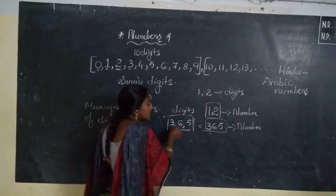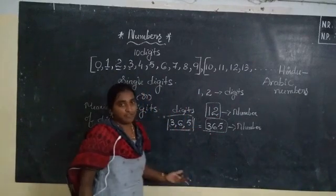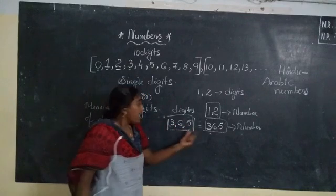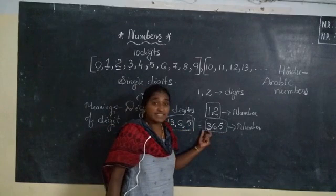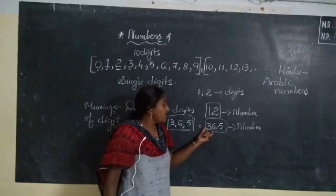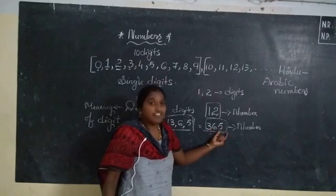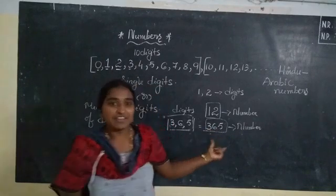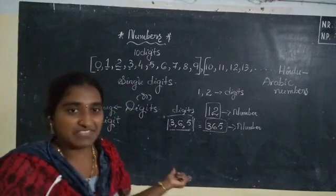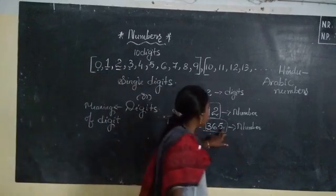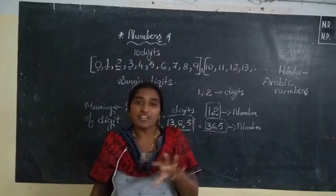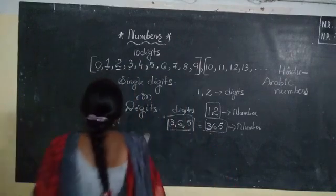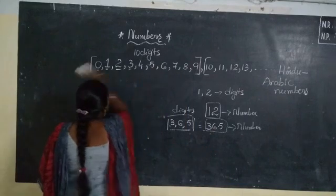Now observe — digits you have to read individually without giving any value: this is 3, this is 6, this is 5. I am not giving any value for these digits when reading. Whereas when reading the number, we should not read it as 3-6-5 separately; we have to give value for each and every digit: 365. So we have to learn the place value chart. In a number, each and every digit has a particular value according to its position — that value is called place value.